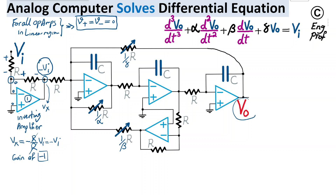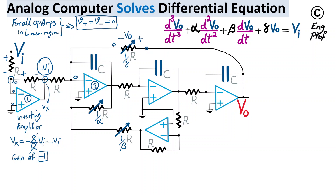Vout appears at the node on the right side of the gamma potentiometer. On the left side of that potentiometer, the connection goes to the negative terminal of op-amp number 2, which benefits from virtual ground, so the voltage there is 0 volts. As a result, there is plus-minus Vout across this potentiometer.